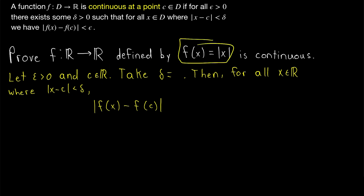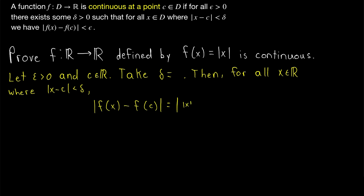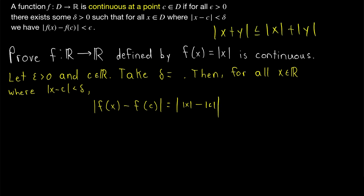Since we know f of x is equal to the absolute value of x, we can rewrite this expression as the absolute value of f of x — which is the absolute value of x — minus f of c, which is the absolute value of c.